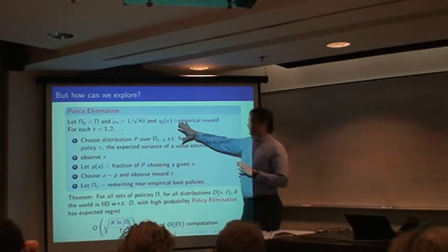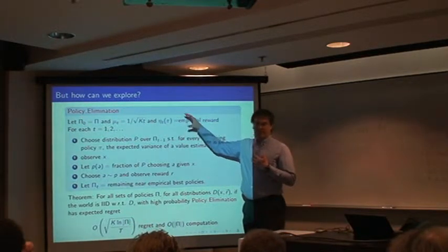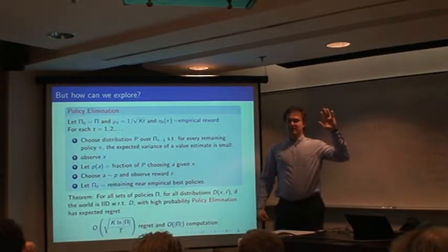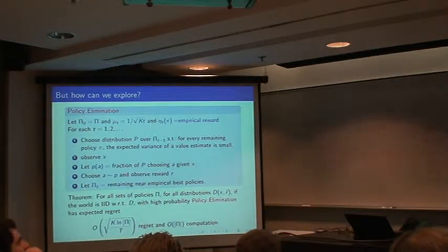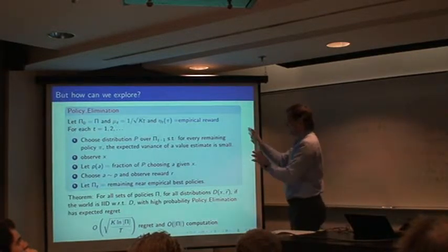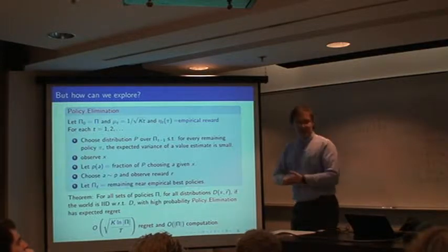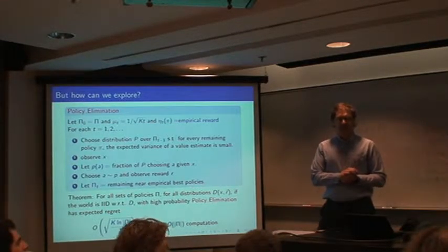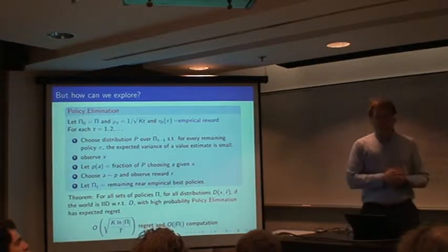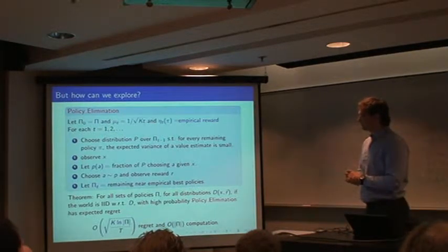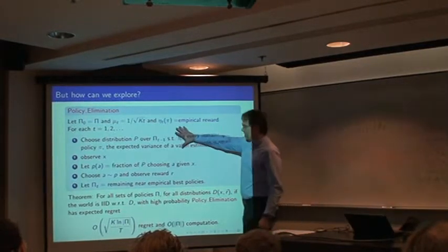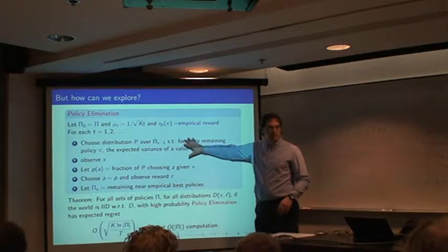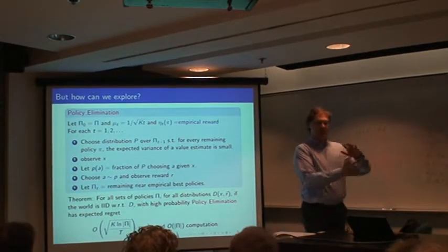So there's essentially two families of algorithms that are now known for solving contextual bandit problems. This is the new family. There's an older one called exp4. Anybody familiar with exp4? That one is kind of more complex. All of the approaches which can give you the square root dependence have this property that they kind of mix together exploration and exploitation together throughout the entire learning process.